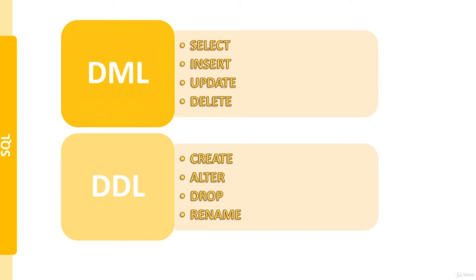DDL, or Data Definition Language, lets you create, modify, or remove tables and other objects in a database. CREATE creates new objects such as tables or views. ALTER modifies the structure of an object, for instance adding or removing columns. DROP removes objects from a database. RENAME changes the name of an existing object. These are not all the statements, only the more commonly used ones.